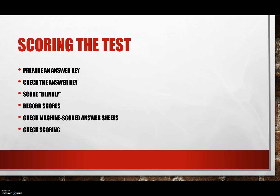Prepare an answer key in advance to save time while scoring. Have an estimated time for completing the test. Check the answer key—it's always good to have a colleague check for correctness and potential problems. Score blindly by keeping the student's name out of sight to maintain objectivity. Check machine scores by reviewing answer sheets for stray marks, multiple answers, or marks that may be too light. Check your scoring before returning papers and make sure to record the grades in the gradebook.